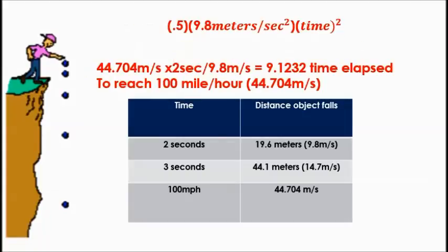So, now, we know this now. So, now, we need to know, we can take our speed, which is 44, which is 100 miles, which is 44.704 meters per second. And we can multiply that by 2, and then divide by 9.8. So, don't let this bottom part fool you, because this is a part of the table that we made. Since we know 100 miles an hour is 44.704 meters per second, we can take the meters per second here, multiply by 2 seconds, and then divide by 9.8 meters per second. That's all we're doing. And we come up with an elapsed time. In 9.1232 seconds of time, this object will be at 100 miles per hour, or 44.704 meters per second.